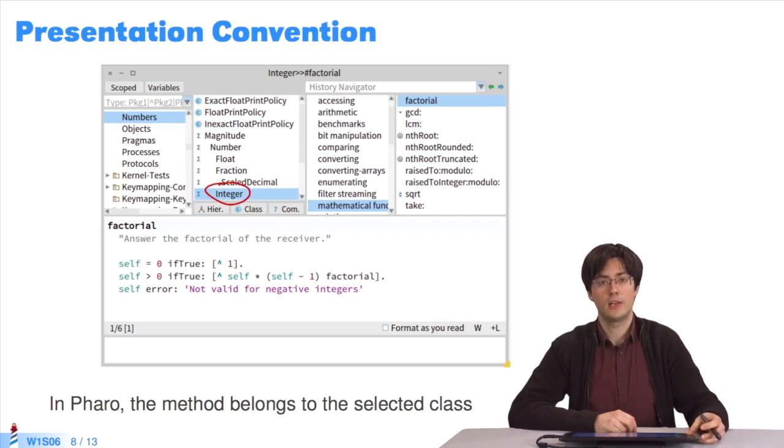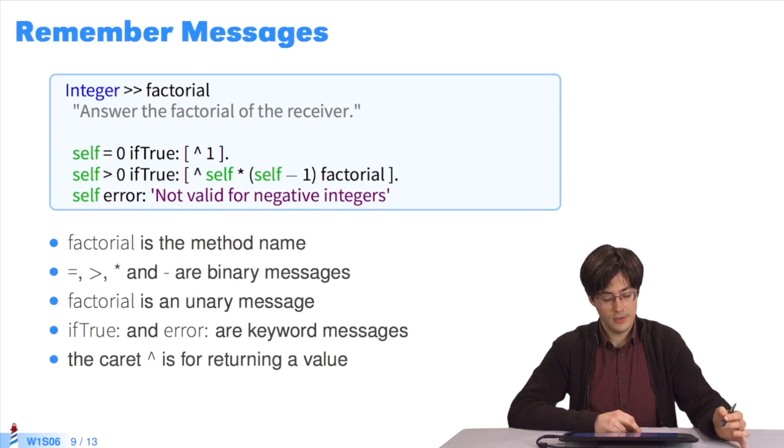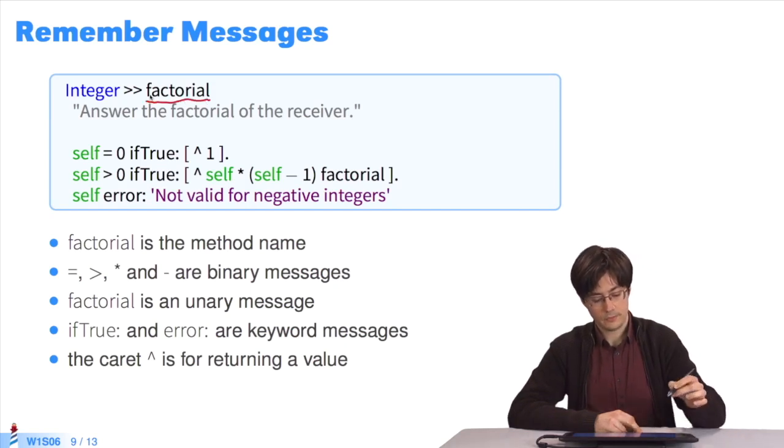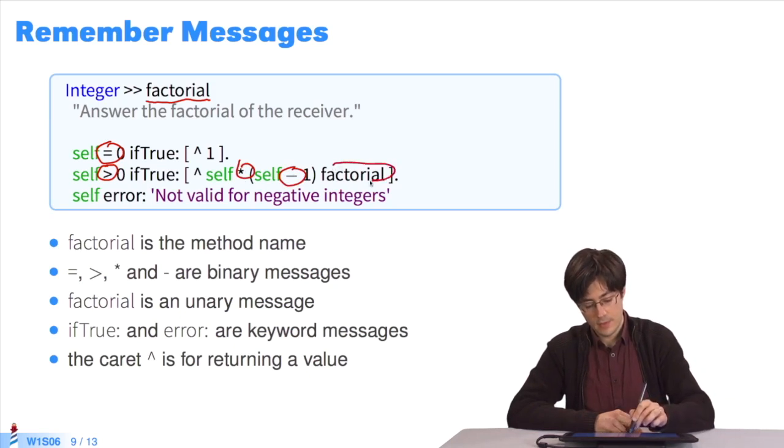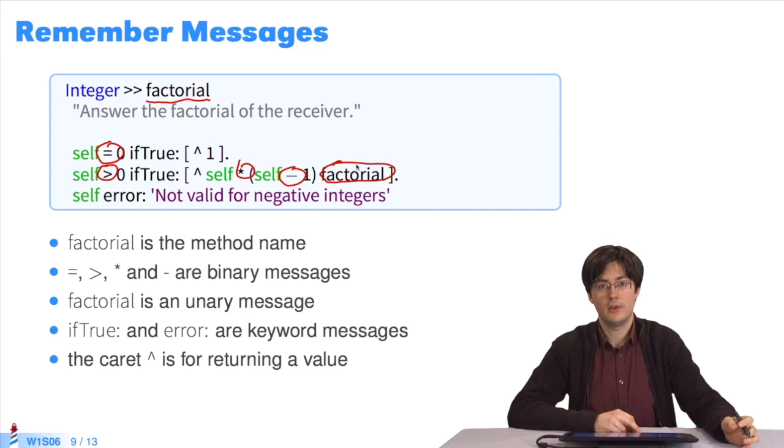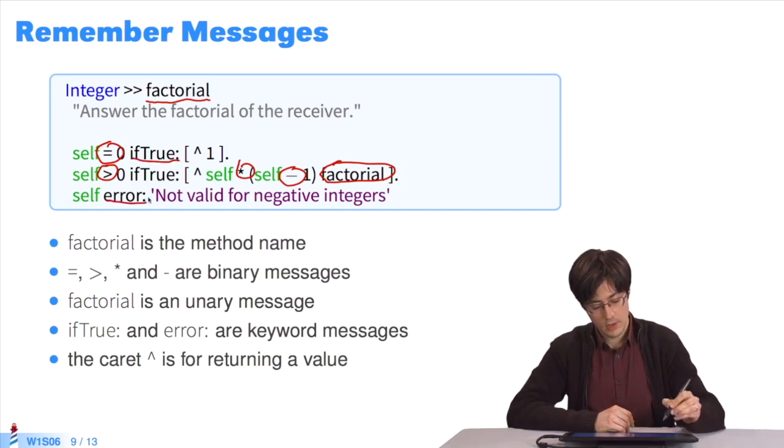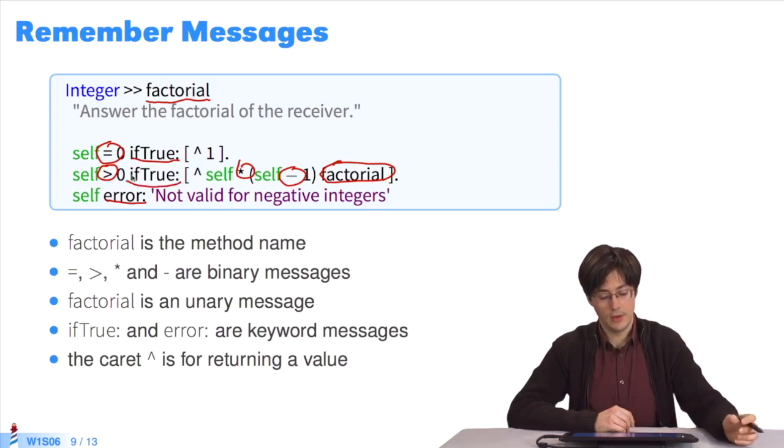Here, we define the method factorial of the class Integer. A little reminder about the messages. We're defining the method factorial. We have all these binary messages: equals, superior to, multiply by, and minus. We have a recursive call to the method factorial. Factorial here is a unary message sent to an object of a number type. And we have two keyword messages: ifTrue twice, and error. And finally, we have the caret, used for returning a value and leaving the method.